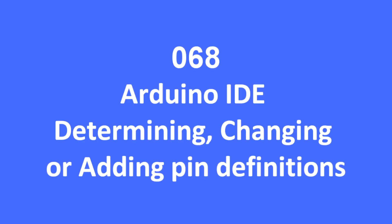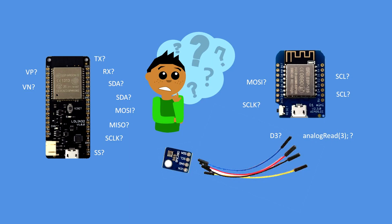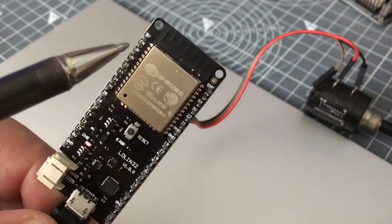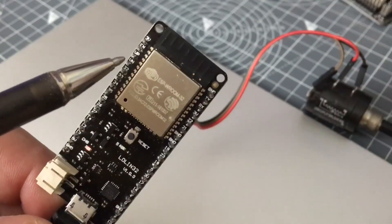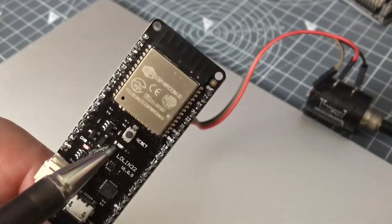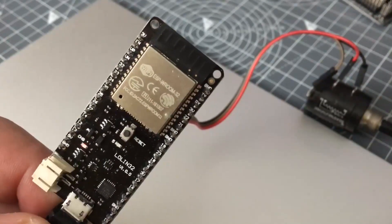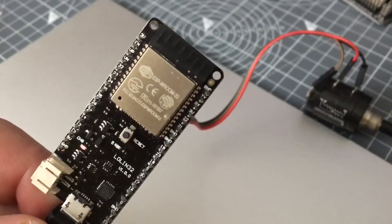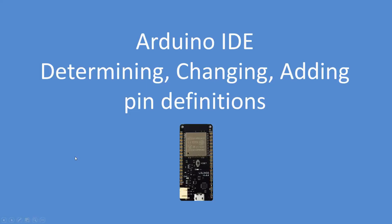Hello folks. In this video I'm going to go through how to determine, change, or add pin definitions within the Arduino IDE. That's the depiction of me when I get a new development board and I have all these new pins trying to figure out which is the SPI and I2C pins. I got this Lolin32 and was going to use that as an example - there's VP and VN, and there's LED on pin 5 but it doesn't work properly.